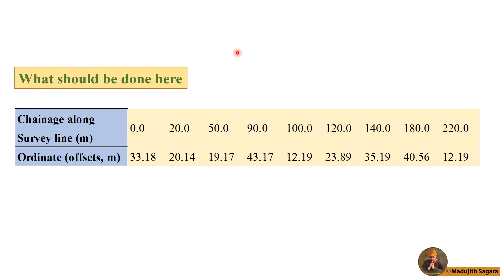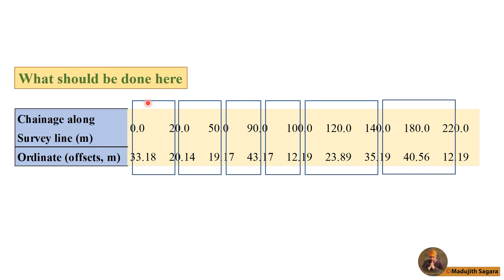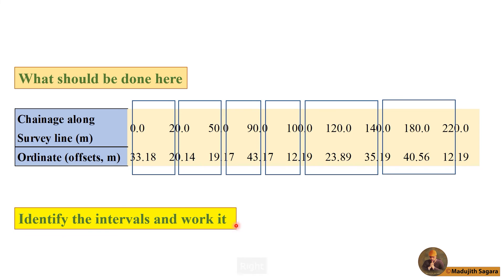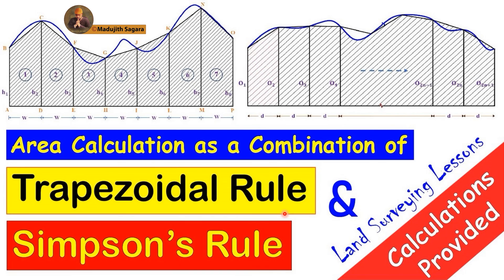When intervals are different, first we need to identify the regions. For example: here is a 20-meter interval, here a 30-meter interval, here a 40-meter interval, here a 10-meter interval, here a 20-meter interval, and here a 40-meter interval. Then we select whether to use the trapezoidal rule or Simpson's rule for each region. This is also a combination of both rules. You can work this out yourself, and if you have any issues, let me know.